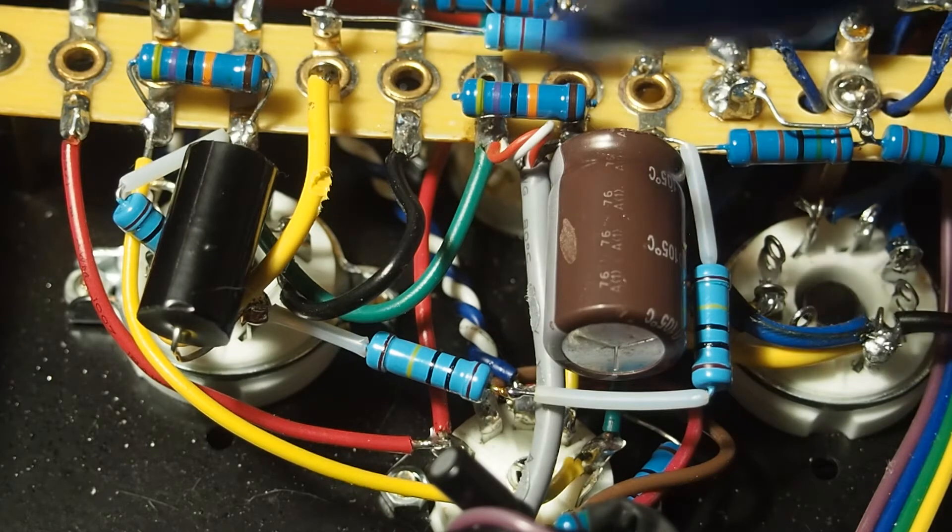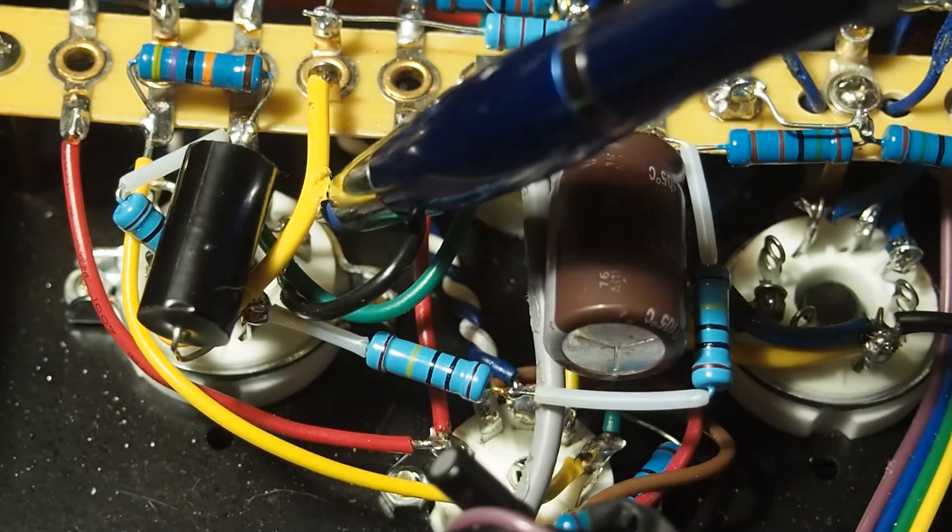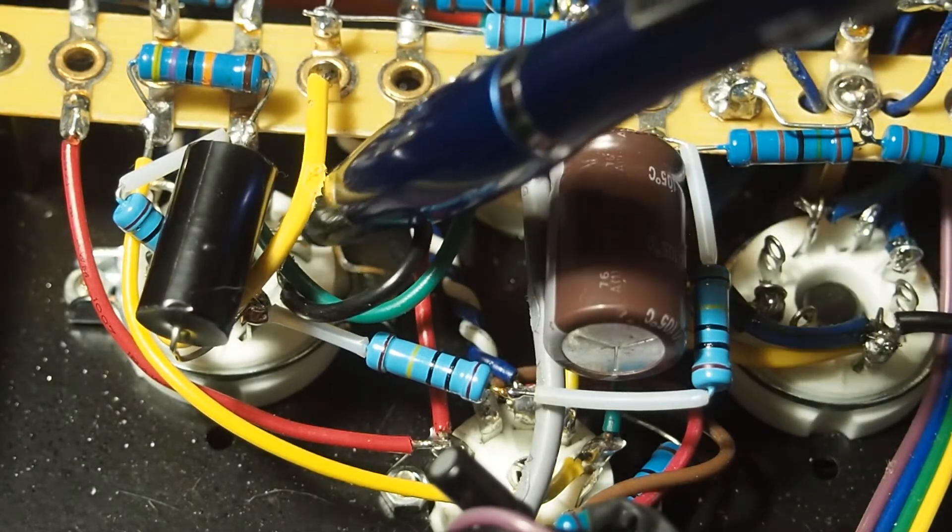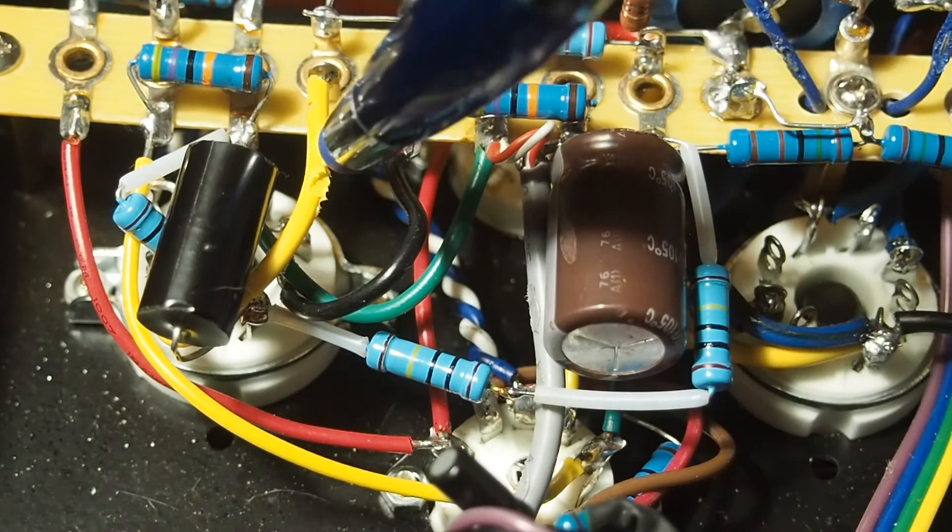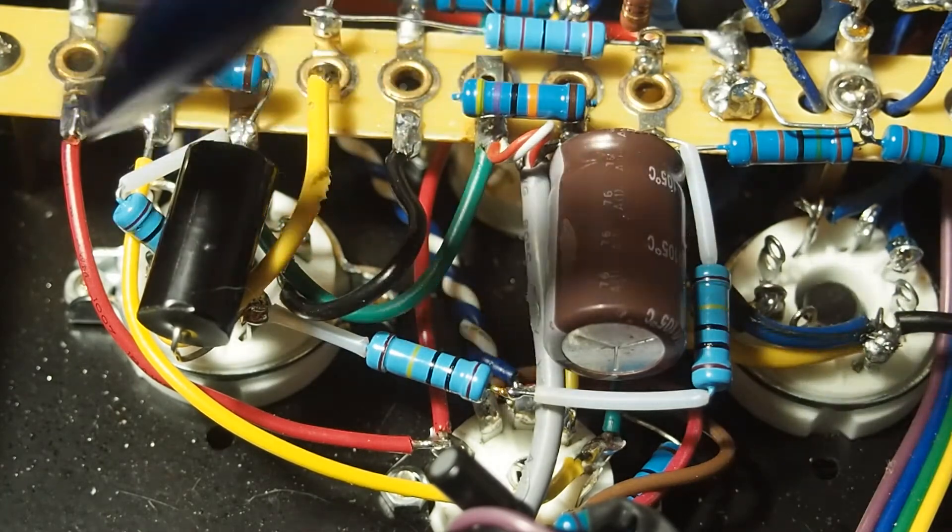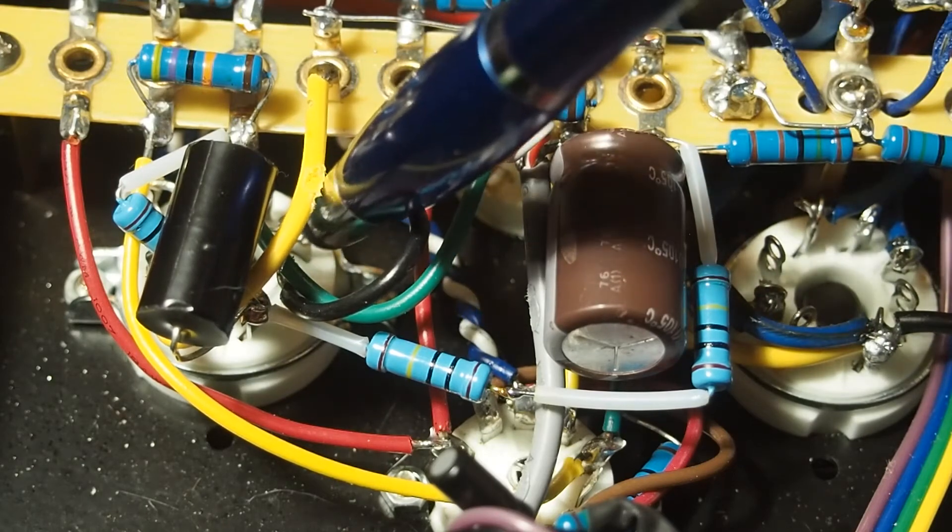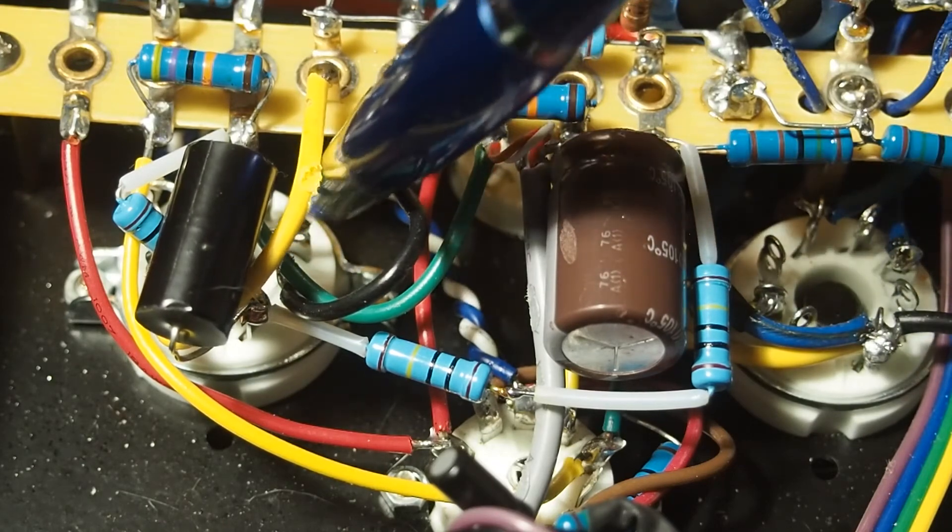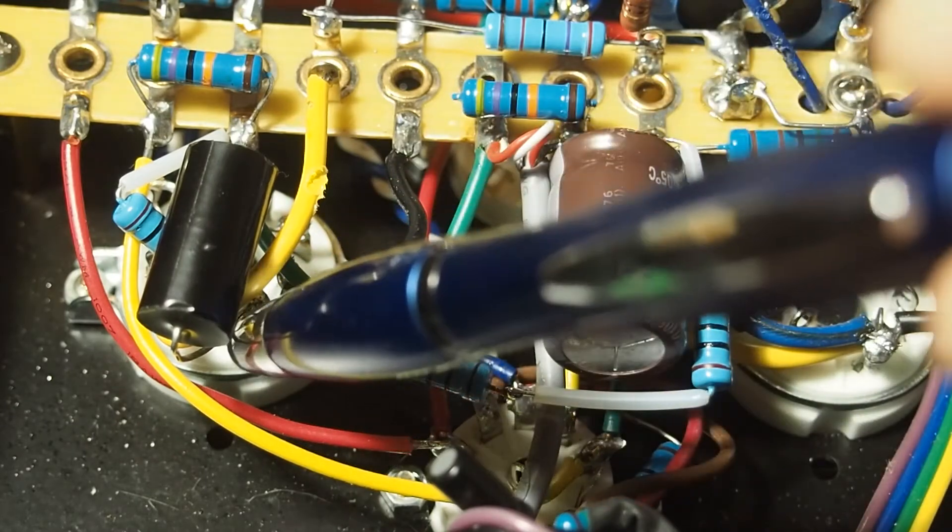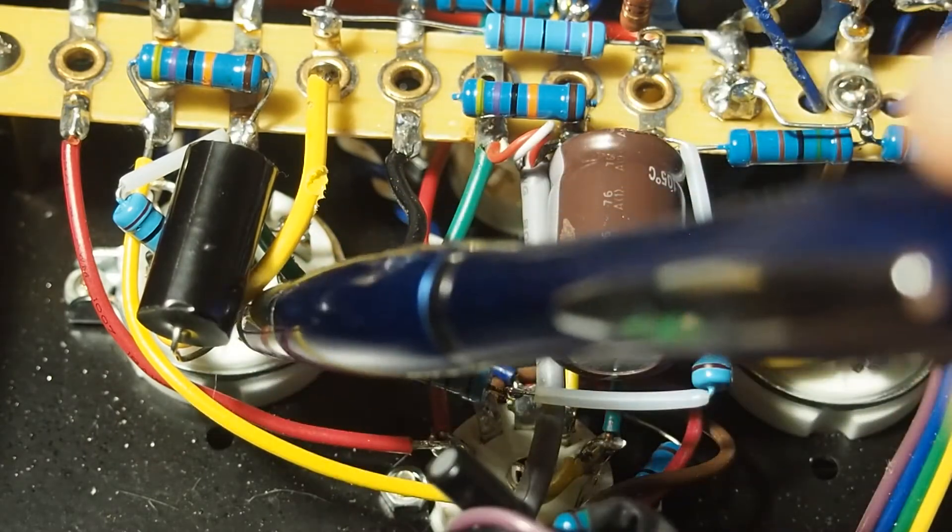Originally, right on this tube, this pin here under this yellow wire, you'll see a piece of wire going across two pins on this tube. And on this end, there's a 1 megaohm resistor that goes from this pin to the pin that this coupling cap connects to.